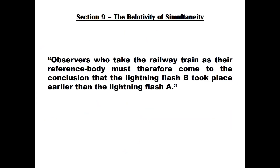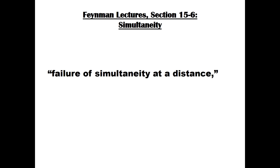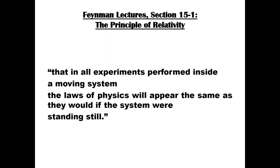As Einstein puts it, observers who take the railway train as their reference body must therefore come to the conclusion that lightning flash B took place earlier than lightning flash A. So what conclusions can be drawn from this result, which Richard Feynman named the failure of simultaneity at a distance? It could be said that this result shows that the principle of relativity does not in fact hold under this circumstance — the laws of physics do not appear the same for a moving system (the train) as they do for a system standing still (the embankment).